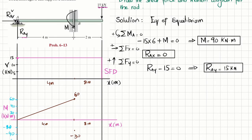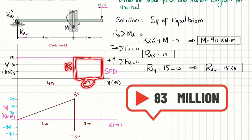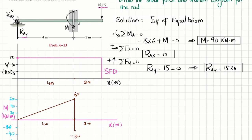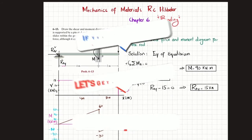The bending moment suddenly changes to −30 at point B. The remaining area beyond B has width 2 and height 15, so 15 × 2 = 30. Thus −30 + 30 = 0, and the moment returns to zero at the end. This portion is also a straight line with increasing slope, and we join these two points. This is the complete bending moment diagram for the rod.